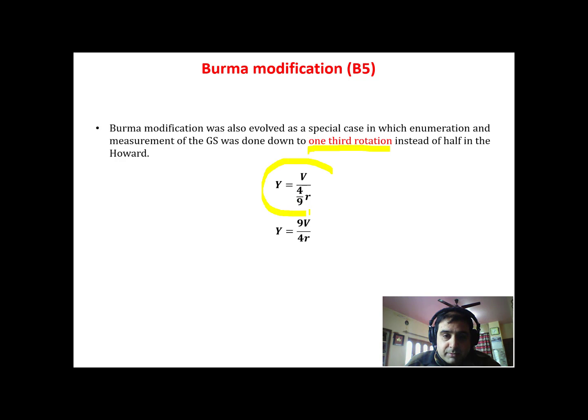So ultimately the formula becomes: yield is equal to v, the enumerated growing stock, upon 4 upon n into r. So ultimately y becomes 9 into v growing stock upon 4 into the rotation.